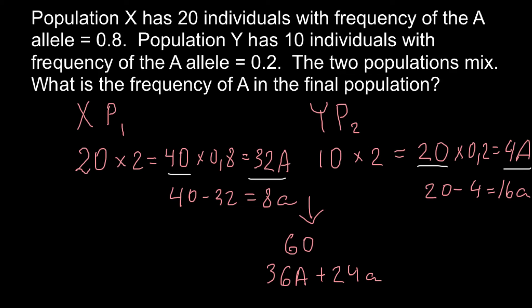And now we can find the frequency in this new population. So this is going to be population 3. And this is very easy. We just have to divide 36 by total number. So this is capital A alleles. And this is total number of alleles capital A plus small a. And the answer here would be 3 over 5. Or we also can say that this is 0.6.